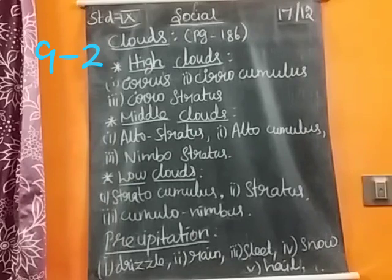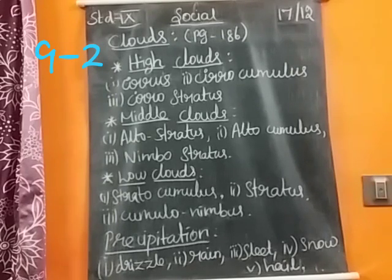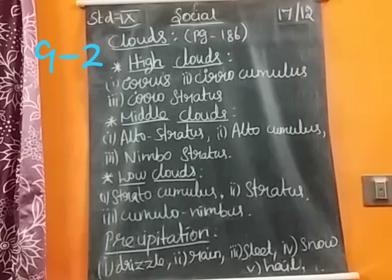Sometimes drizzle combines with fog and hence reduces visibility. Rain is the most widespread and important form of precipitation, occurring in places having temperatures above the freezing point.